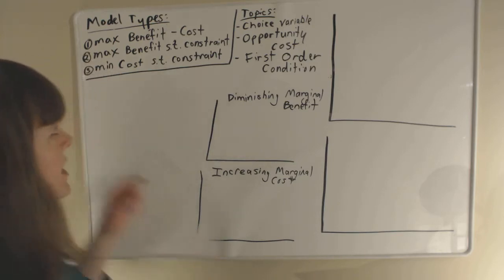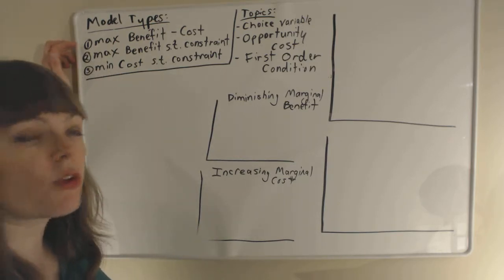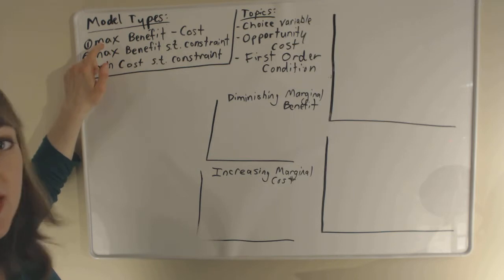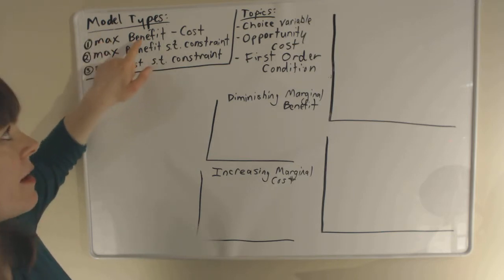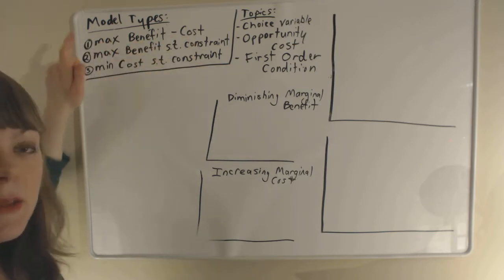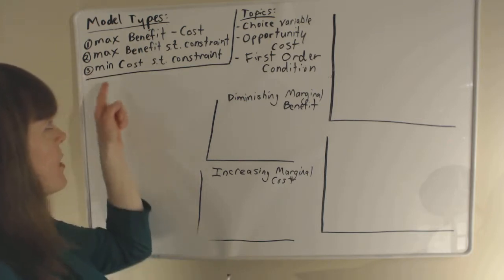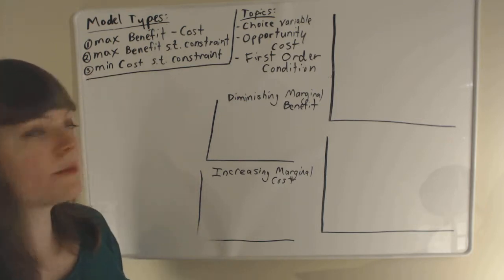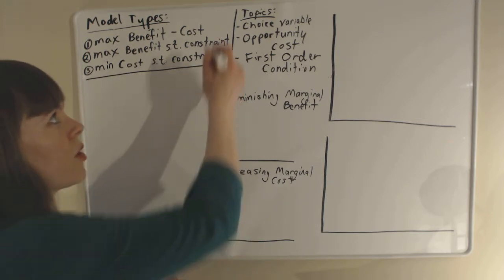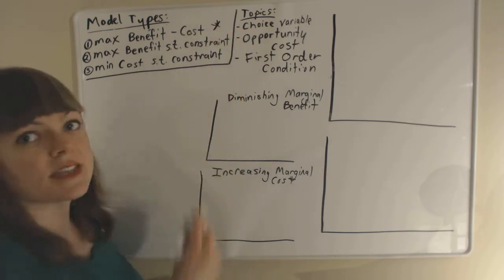There are three basic models in microeconomic theory: you can maximize the benefit minus the cost, you can maximize the benefit subject to a constraint, or you can minimize the cost subject to a constraint. This video looks at the first one in detail.